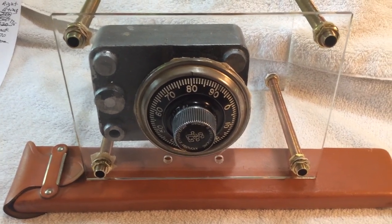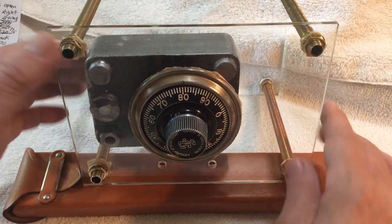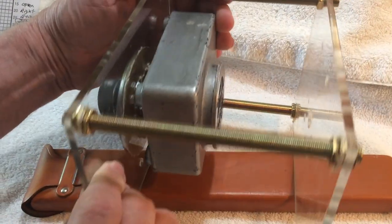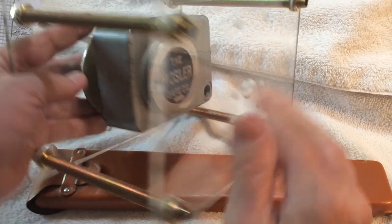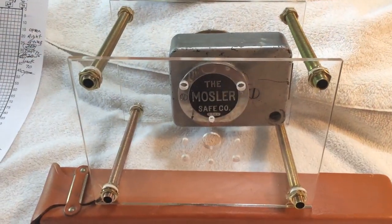We made one yesterday on the Yale Lock friction lock, and I'll turn this around so you can see the back of it. We had a dial but it was cut off. The stem was cut off so you couldn't see it.